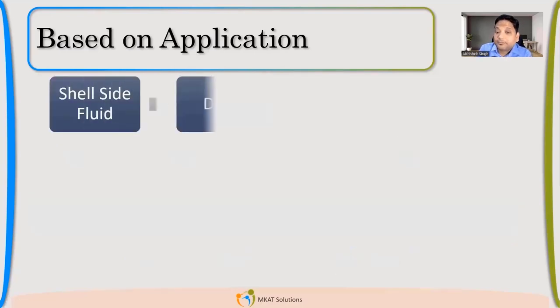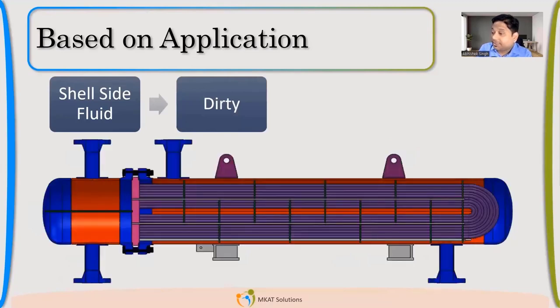Now, again, with the same case, shell side dirty fluid, can I take this kind of heat exchanger? It's a BEU type. Can we use? Yes, we can use because now I can remove the tube bundle and I can clean it. So mechanical cleaning is also possible. All the other types of cleanings are also possible. So this kind of configuration I can use.